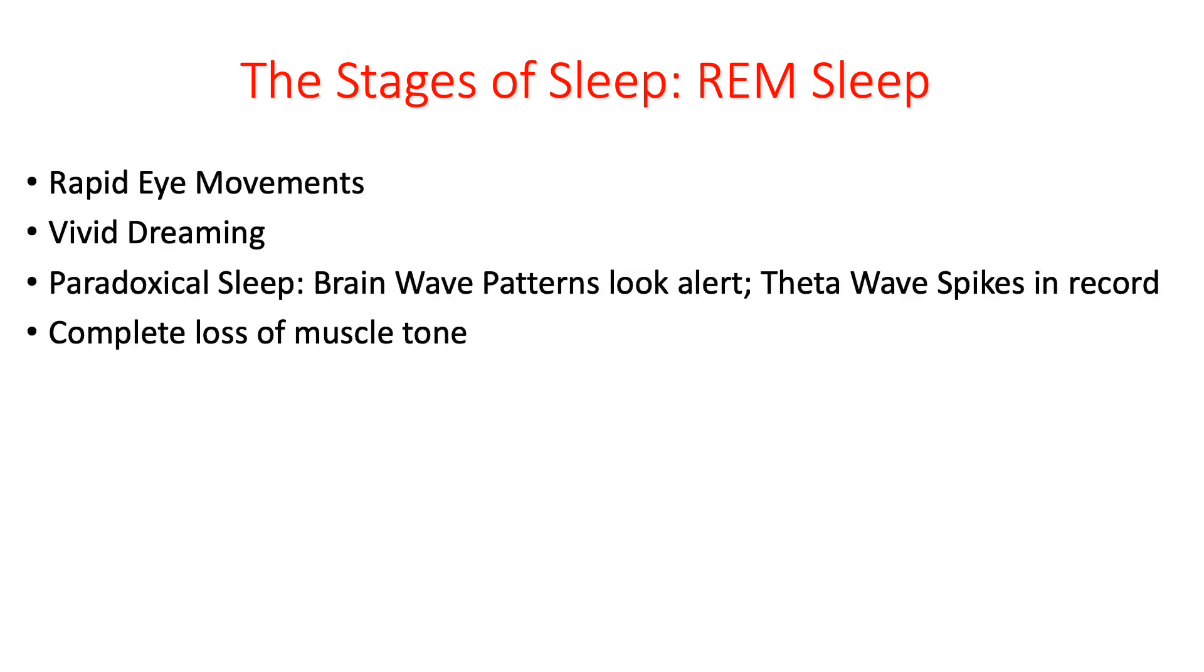REM sleep is characterized by rapid eye movements, very vivid dreaming. It is referred to as paradoxical sleep because the brain wave patterns look very much like beta waves, like a person who's alert and awake, and there's a complete loss of muscle tone in REM sleep.